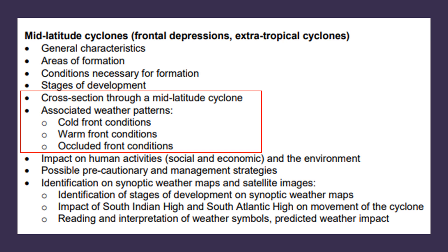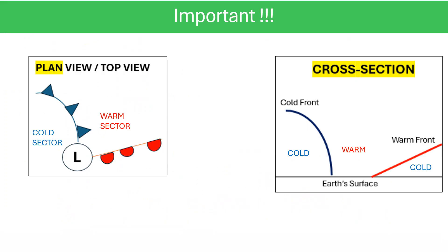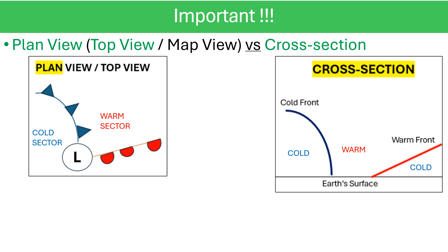Let's have a look at a cross-section of the mid-latitude cyclone, as well as the weather conditions one is likely to experience at a cold front, a warm front, and at an occluded front. It is important to know the difference between what is called a plan view and a cross-section. Using the mid-latitude cyclone as an example, the examiner could ask you to draw a labelled plan view of the mature stage of a mid-latitude cyclone. In this case, the examiner wants you to draw the mid-latitude cyclone from above or from the top.